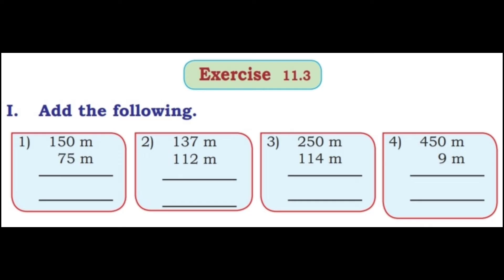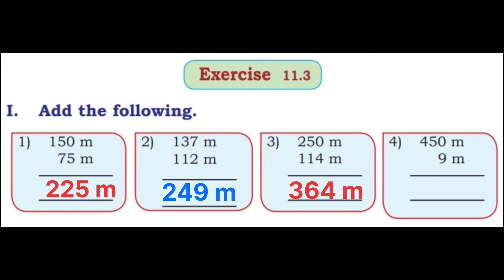Let's see Exercise 11.3. First main — Add the following. First: 150 m + 75 m. 0 + 5 = 5; 5 + 7 = 12, write 2 carry 1; 1 + 1 = 2. Answer: 225 meters. Second: 137 m + 112 m. 7 + 2 = 9; 3 + 1 = 4; 1 + 1 = 2. Answer: 249 meters.